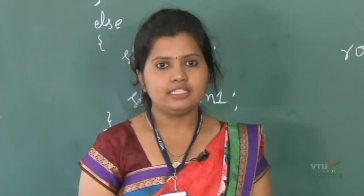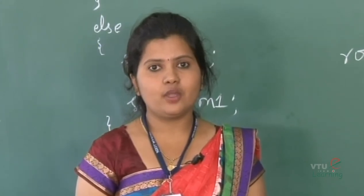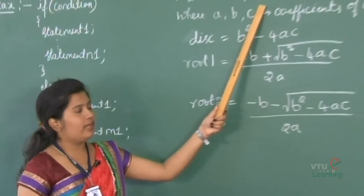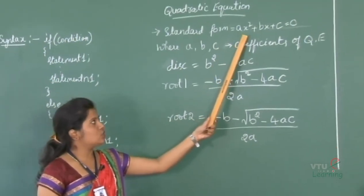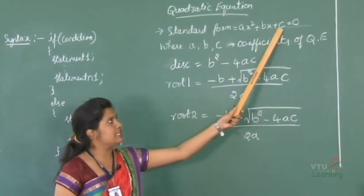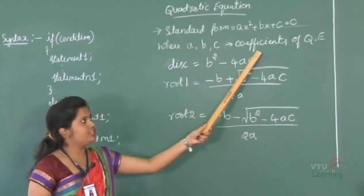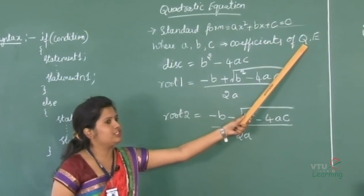Now, let's start the program of a quadratic equation. The purpose of this program is to demonstrate if and if-else conditional control constructs. The standard form of a quadratic equation is Ax² + Bx + C = 0, where A, B and C are the coefficients of a quadratic equation.